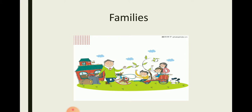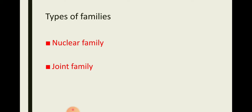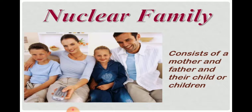You can see over in this picture. It is a family. There are two types of family: nuclear family and joint family.